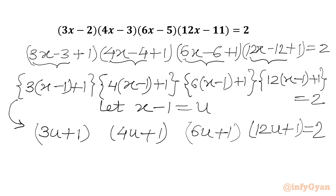Now I will multiply brackets 1, 2, 3. Here I will be multiplying with 4, so that 4 times 3 will give us 12. I need to multiply here with 3, so that 3 times 4 will be 12. Here we will be multiplying with 2, getting the same product 12. Here it is already 12. So we have multiplied 4 times 3 times 2 — overall it is 24 in LHS.